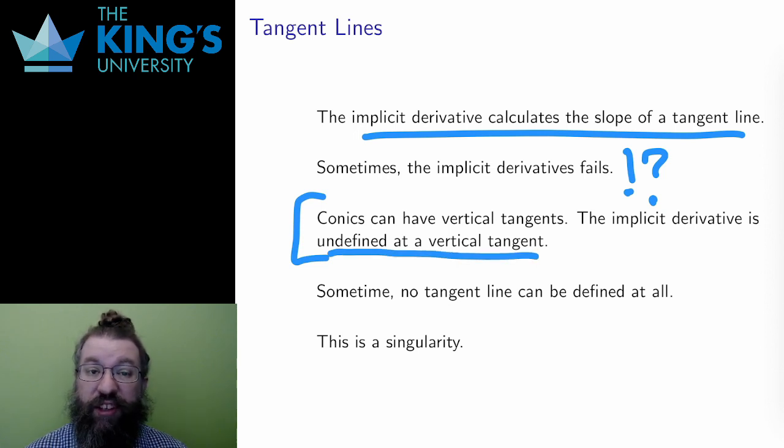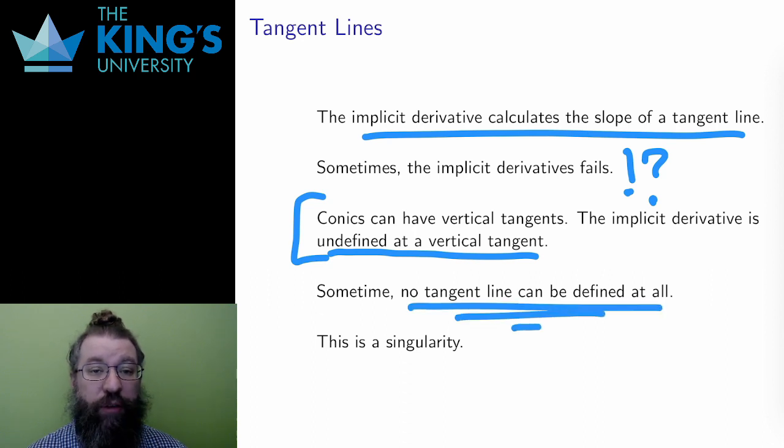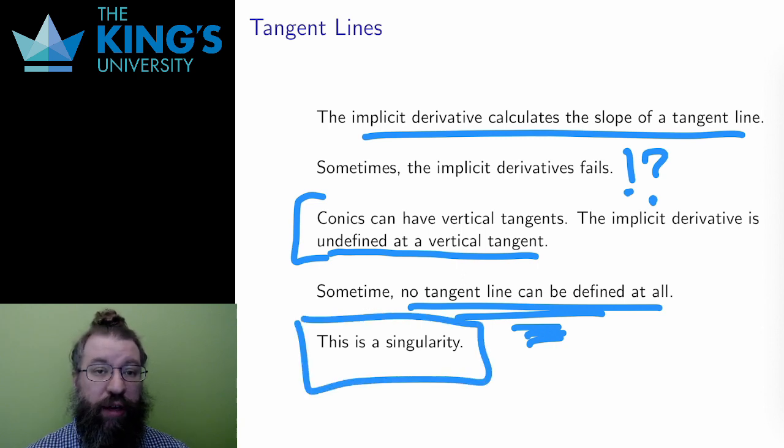However, in addition to this problem, there can also be points where the tangent line itself isn't defined. There are other problems with implicit differentiation other than just vertical tangents, other places where the implicit derivative will fail. These are called singularities, at least for algebraic plane curves.